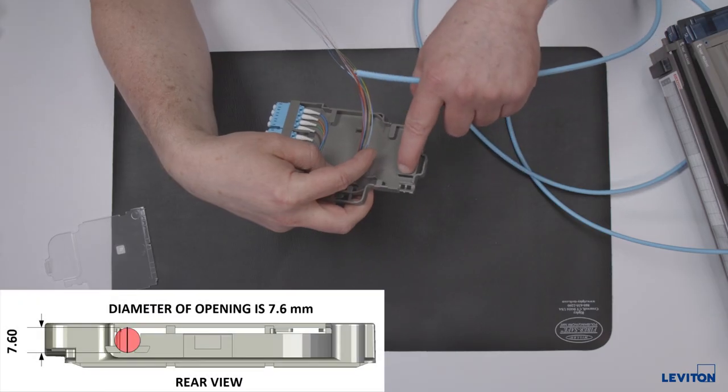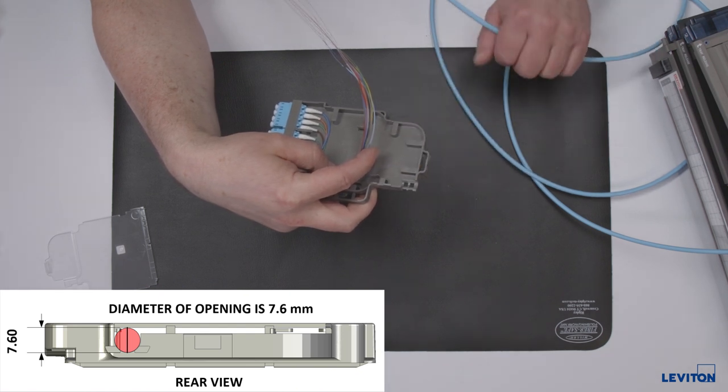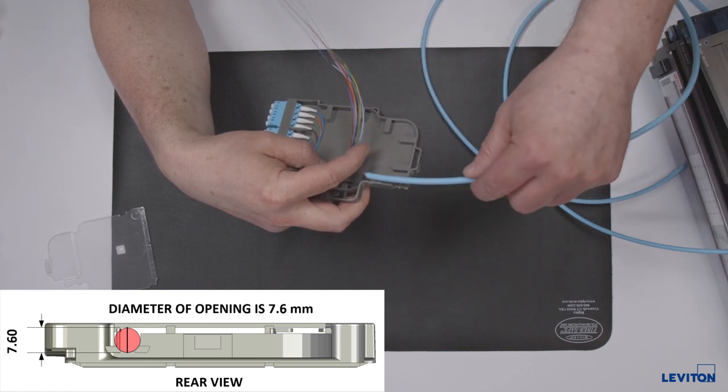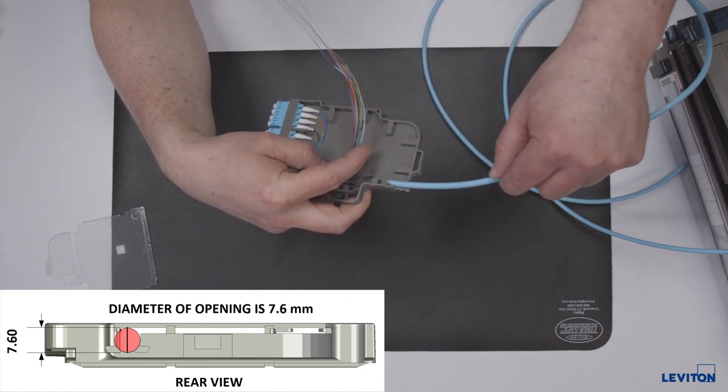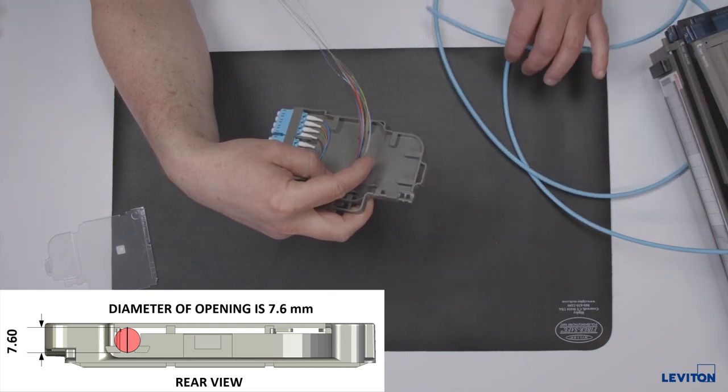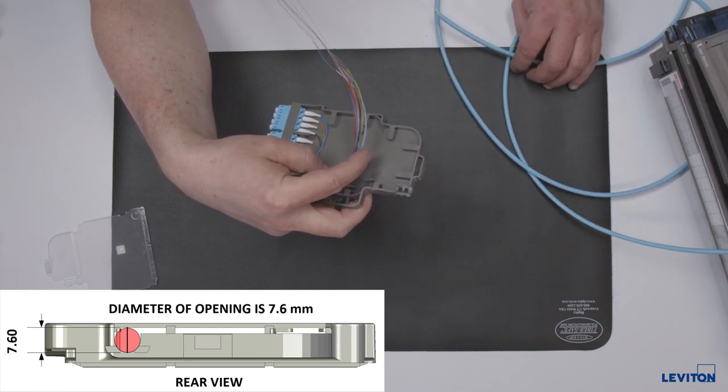The incoming cable opening at the rear of the splice module has a diameter of 7.6 millimeters or 0.3 inches. While most common 12 fiber cables have a smaller diameter, each incoming fiber should be evaluated to verify correct sizing as cable constructions do vary.